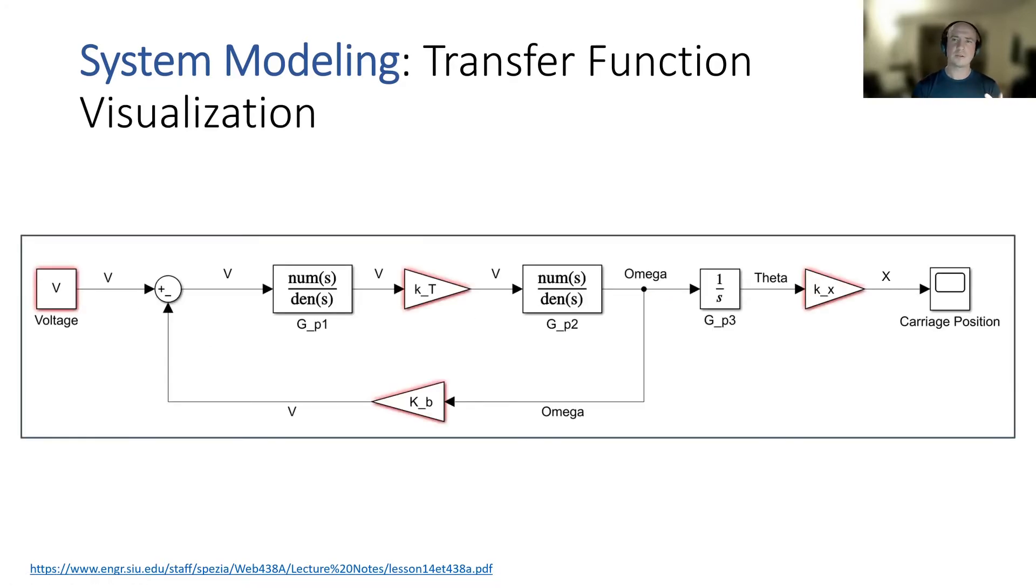But looking at all those equations, it's kind of unintuitive how they actually operate and interact with each other. So what I've done here is I've created a model in Simulink to demonstrate how all of them interact. You'll notice that in the beginning of this loop, you have an input voltage that gets transformed eventually into a motor speed. And then you actually have a voltage subtracted from the signal based on the back EMF coming from the motor.